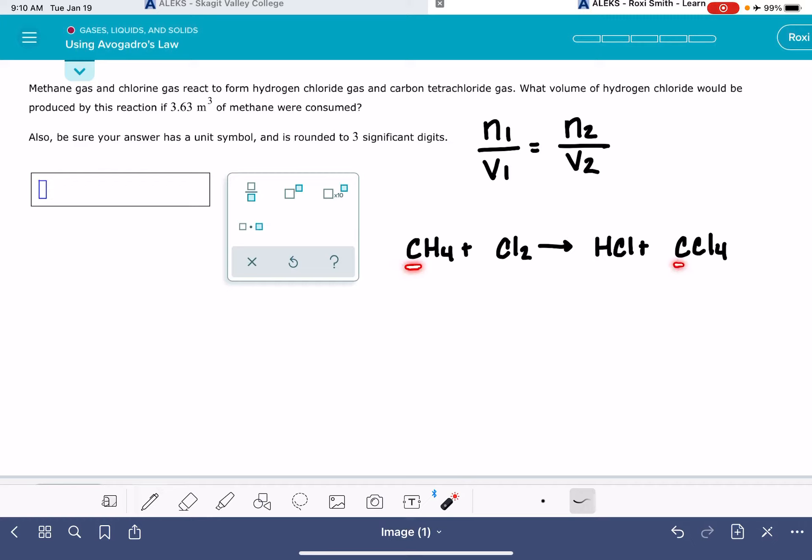One carbon on the left, one carbon on the right looks good. Four hydrogen on the left, one hydrogen on the right. So I'm going to put a four right there. Two chlorines on the left, and counting on the right: one, two, three, four, five, six, seven, eight chlorines. So we'll put a four right here. So here's our balanced equation.